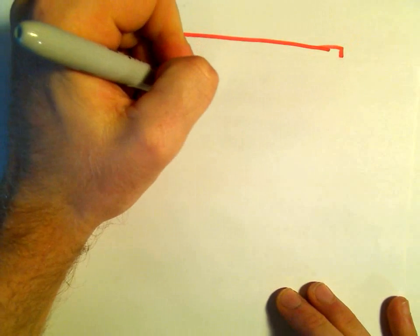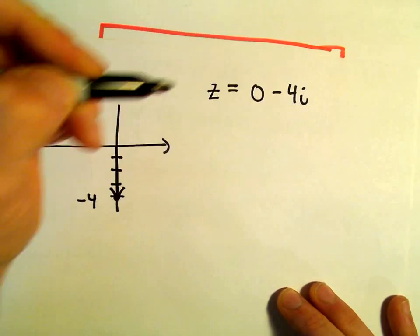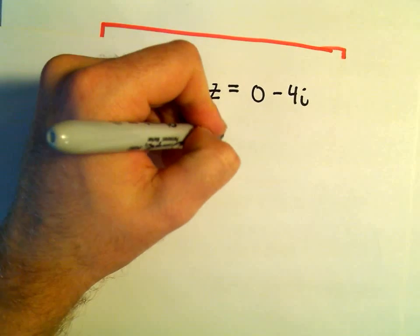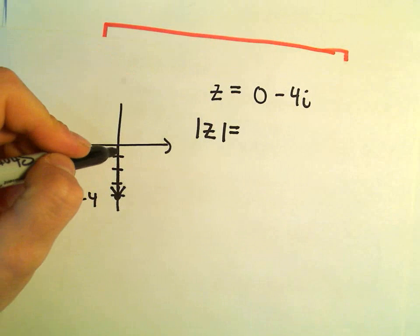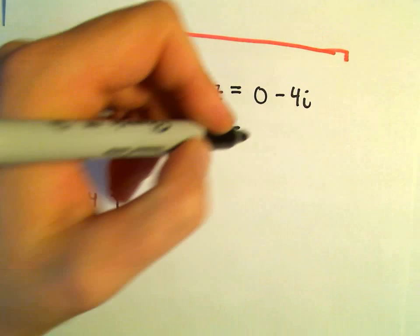All right, so again, our complex number z is 0 minus 4i. The modulus is just the length, so you can always use Pythagorean theorem. But in this case, I think it's pretty easy to see that the length of this, or the modulus, would simply equal 4.